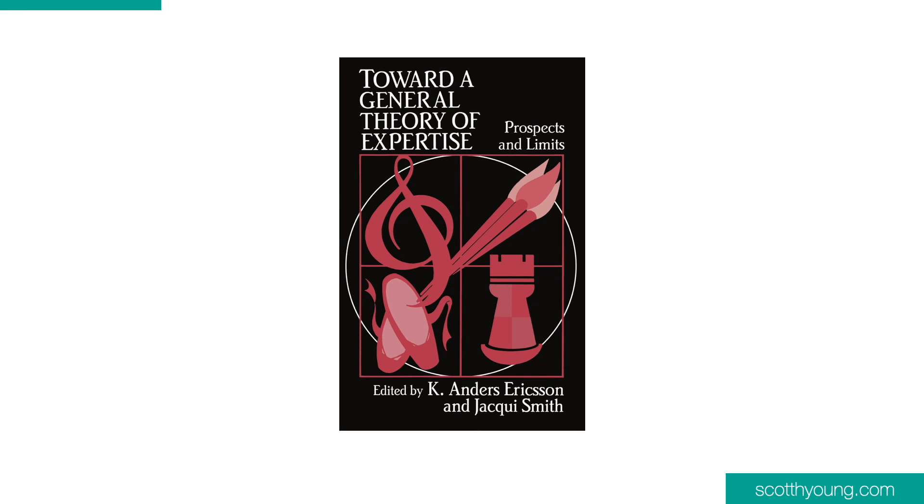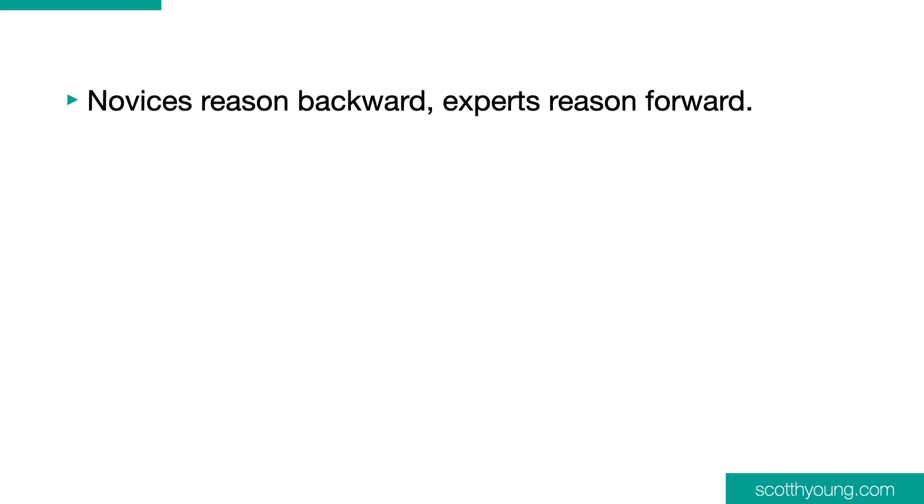Number two: Toward a General Theory of Expertise, edited by Anders Ericsson and Jackie Smith. What makes experts better than beginners? What changes in the mind allow a grandmaster to pick the right chess move, a doctor to diagnose the right illness, or a tennis pro to hit a perfect backhand shot? The study of expertise has produced a host of replicable findings about the differences in expert performance. Number one: novices reason backward, experts reason forward.